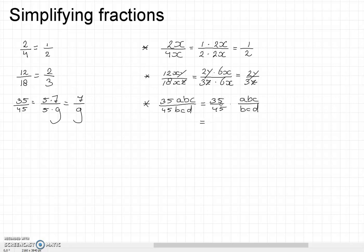That way it's easier to see that 35 over 45 is 7 over 9, and abc divided by bcd has bc in common, and a and d are different.